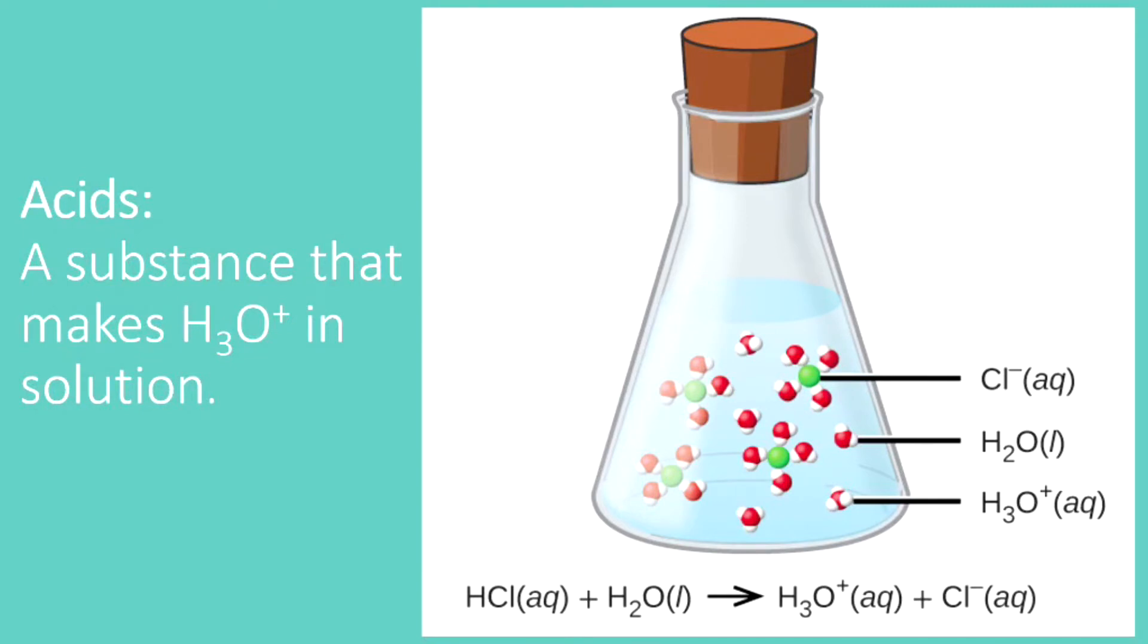And so if you look at this flask that contains hydrochloric acid, you'll see some green ions floating around that are chloride ions. You'll see some red and white molecules floating around that are water molecules. And in some cases, those water molecules have not just two hydrogens, but three. They've gained an extra hydrogen ion. So they have one, two, three. This is what makes that thing acidic. If it makes H3O plus in solution, it's an acid.